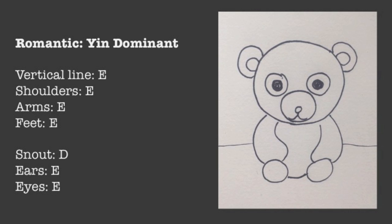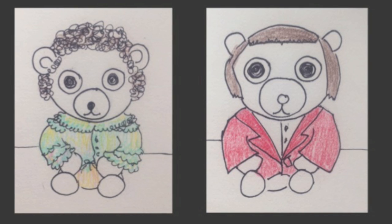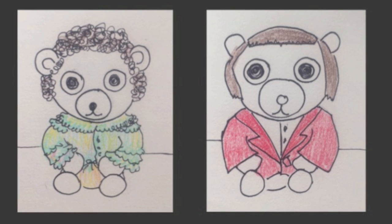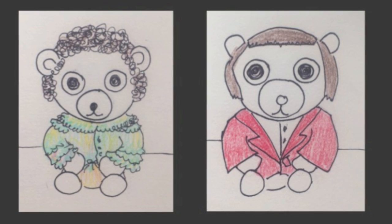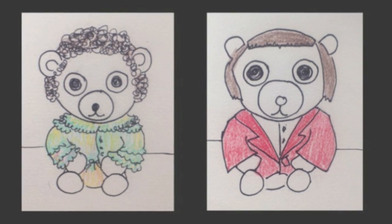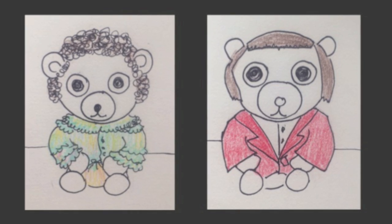Next up we have romantic. This teddy bear is very yin dominant - everything about him is very rounded. He has a short vertical line so he looks very small and tiny, his arms and legs are short, his feet are very rounded, and his ears and snout are all very rounded. He looks amazing when he works with his rounded lines wearing light fabrics with intricate detailing. On the right with stiff fabrics and a geometric haircut, he can look a little bit overpowered and like he's drowning in that outfit.